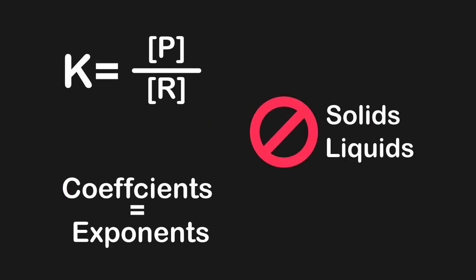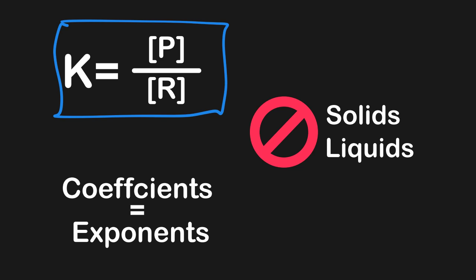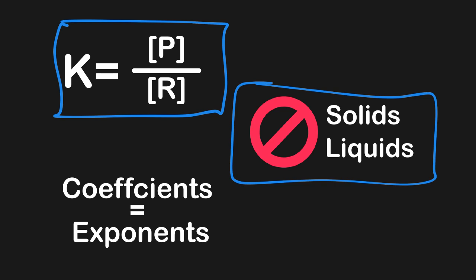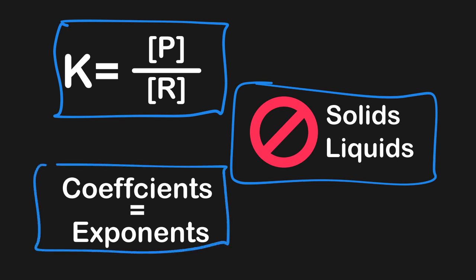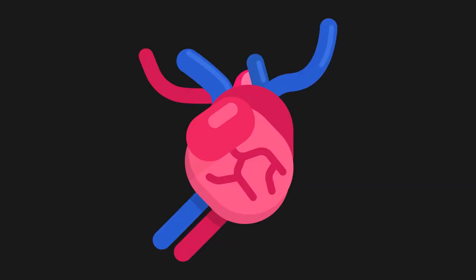Before we go, let's recap the three key pieces of information about equilibrium constants. First, all K values, regardless of what they are, are always equal to the concentration of products over reactants. When we write these, we always exclude solids and pure liquids — mostly water, but any other solvent too. Lastly, if we have coefficients to make our reaction balanced, those coefficients become exponents attached to the particular concentration they describe. If you found this video helpful, make sure to like and subscribe for more helpful MCAT tips and share it with anyone else who might be taking the test.